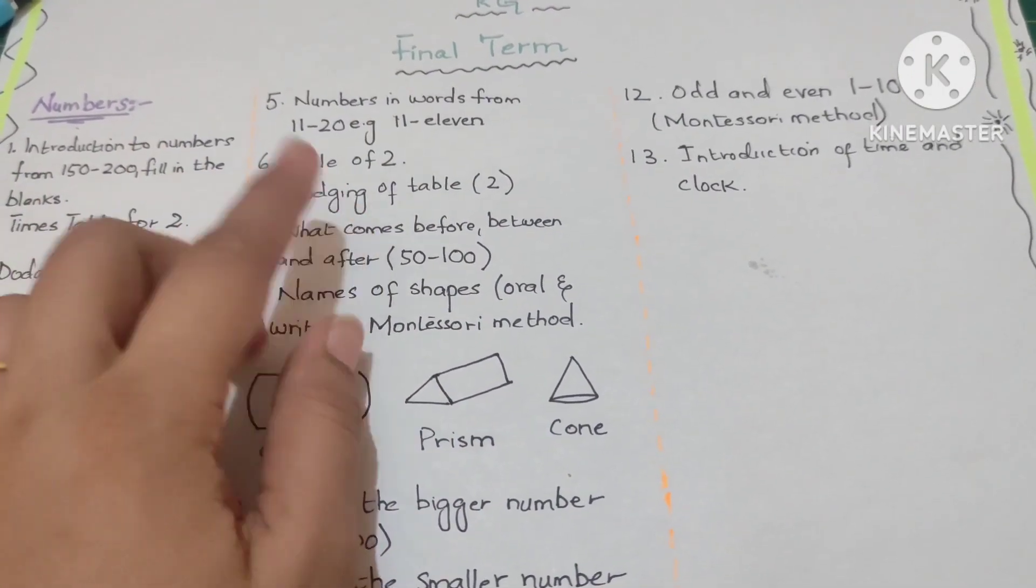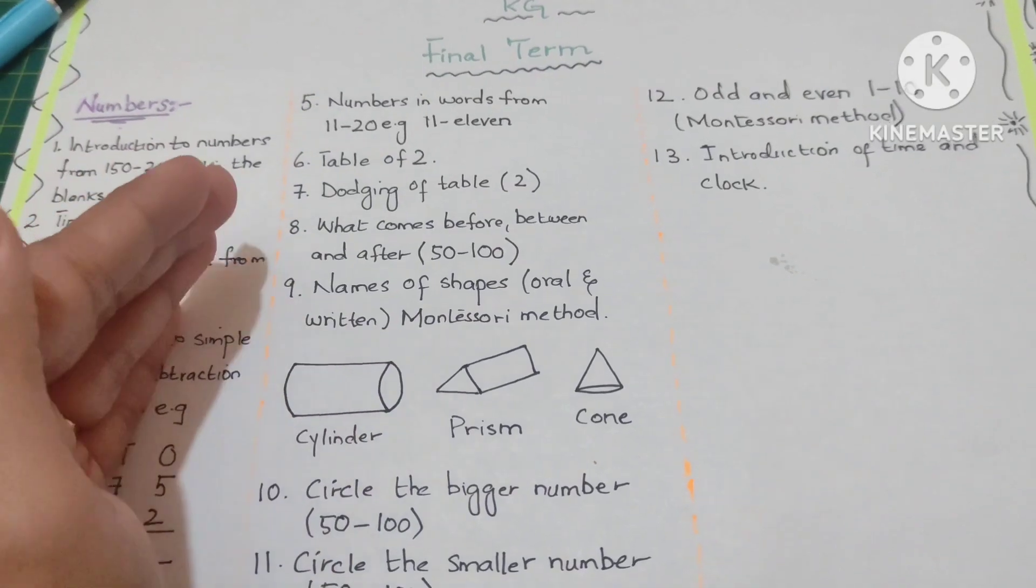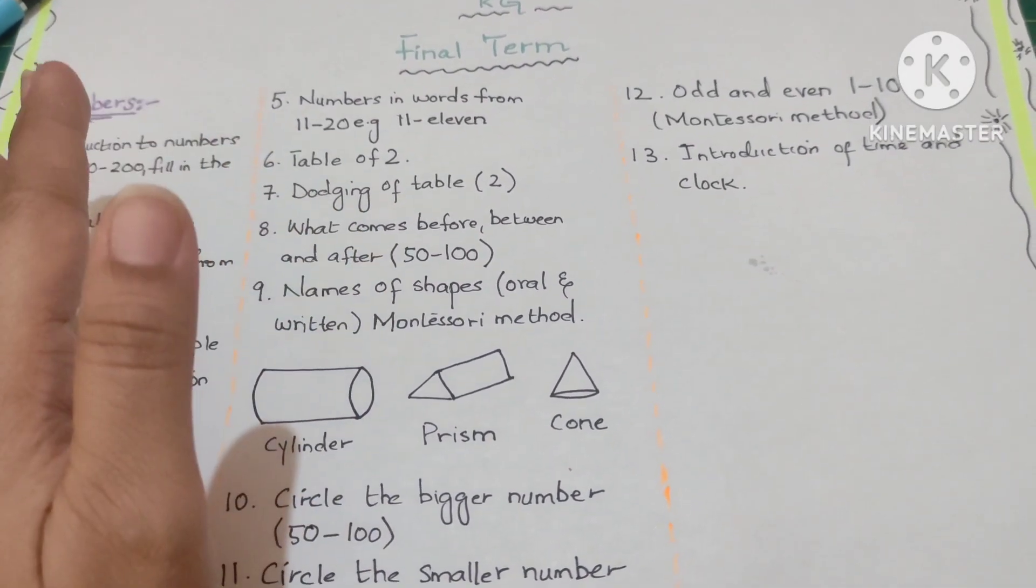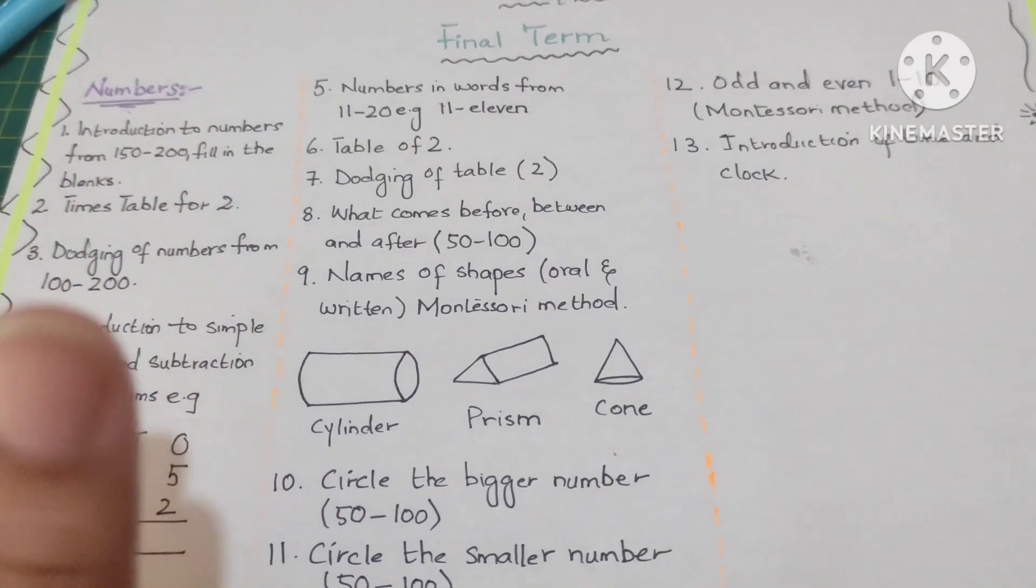Next is table of two which they have started but they'll keep on revising the two times table and then the dodging table will be given to the child for them to memorize it easily.